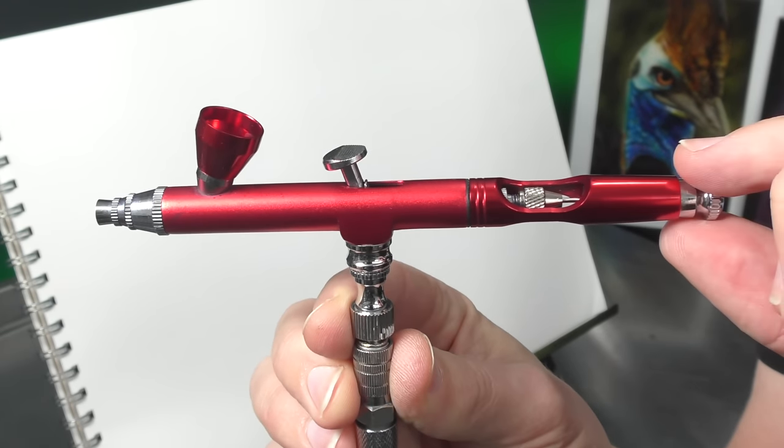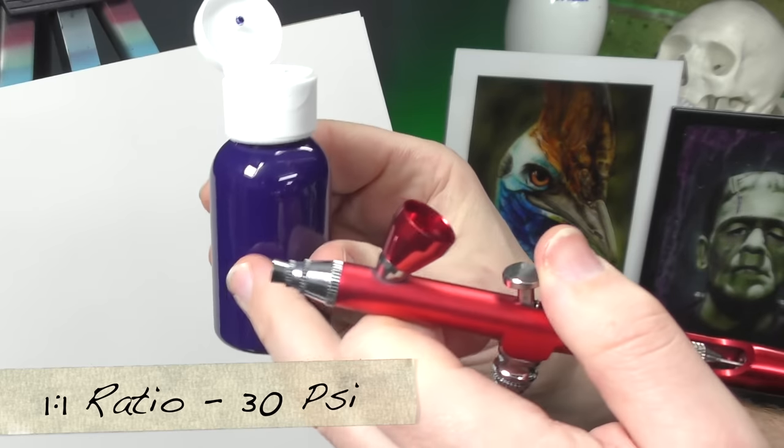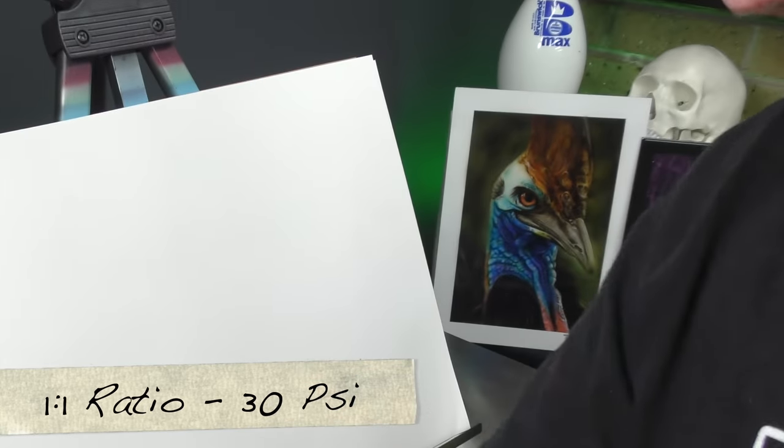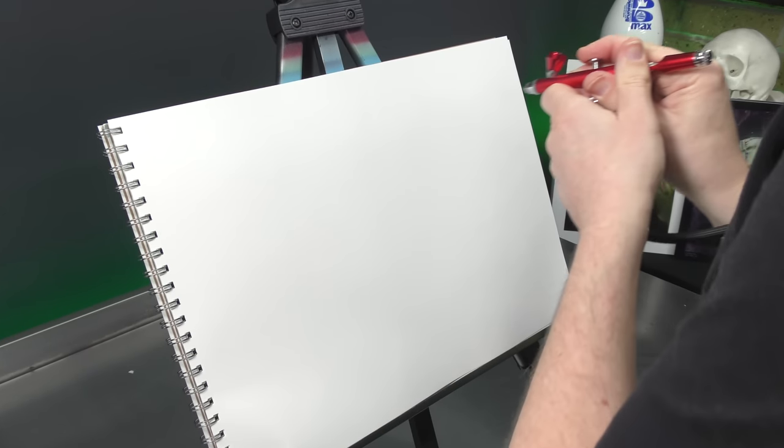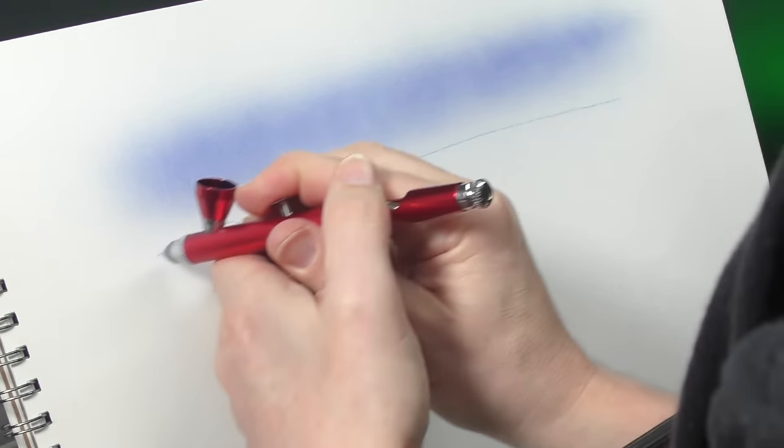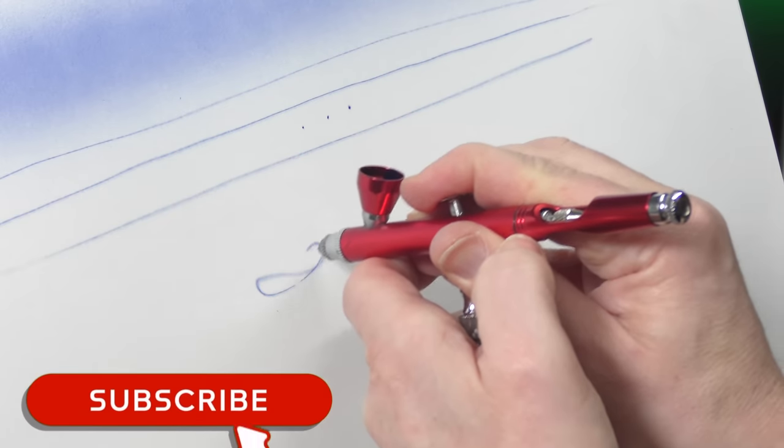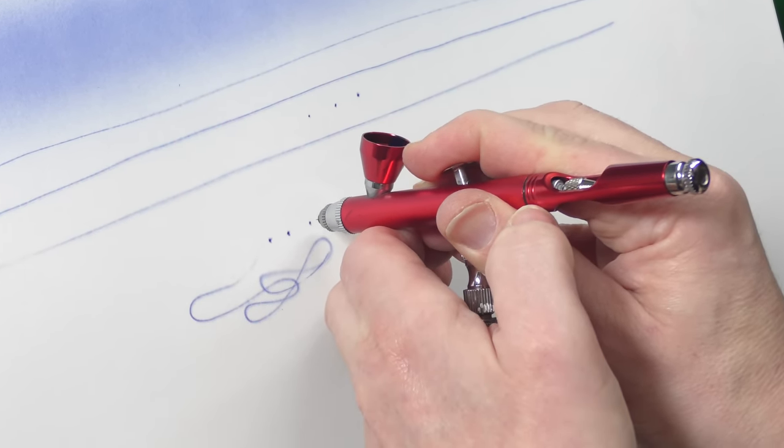The first test I'm using a cheap airbrush, just one that you can find on Amazon, starting with that one-to-one mix. Because this mix is thicker you can run at a higher PSI, so I'm running at 30 PSI. I'll go ahead and remove the air cap, exposing the needle, do some quick warm-ups. You can see even at this thickness I'm able to get fine detail out of it, and considering this isn't a very expensive airbrush at all.